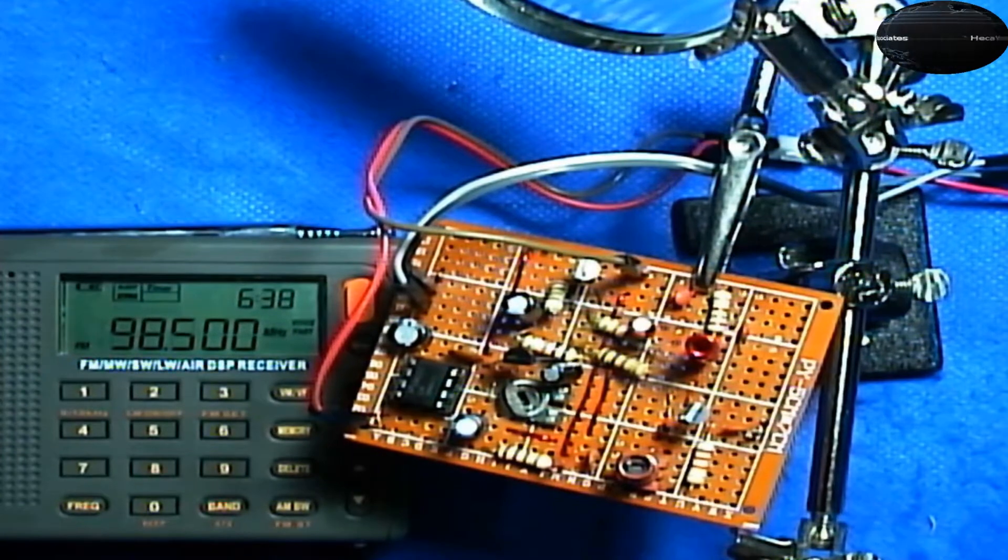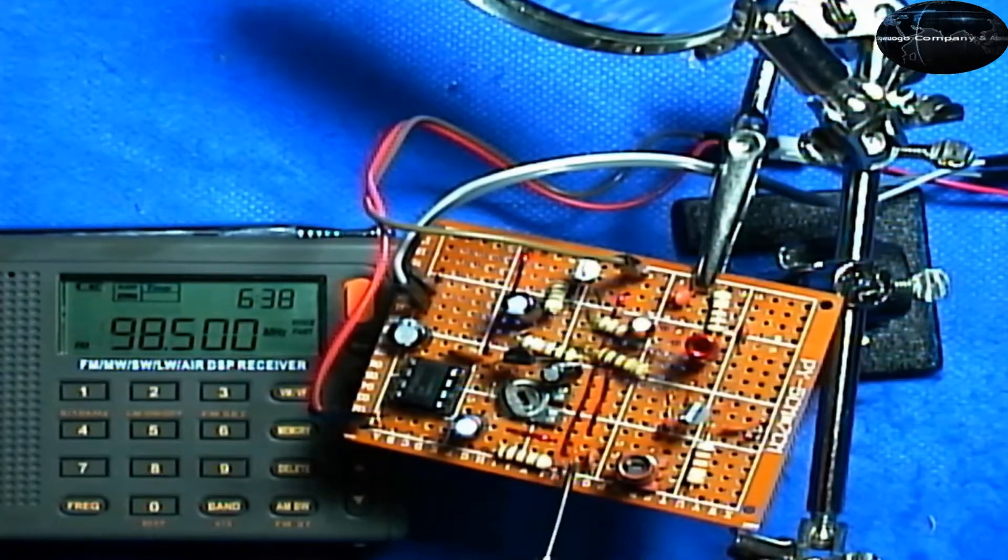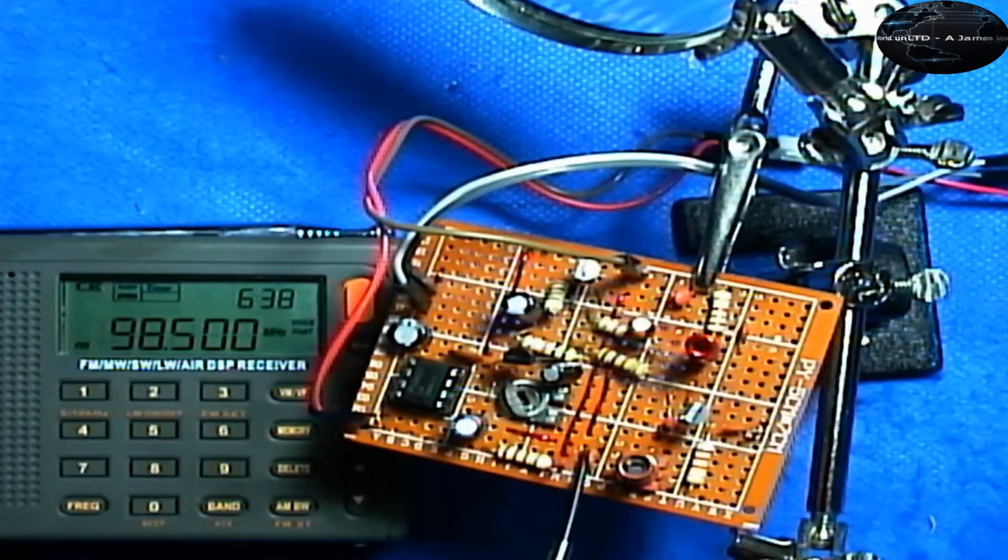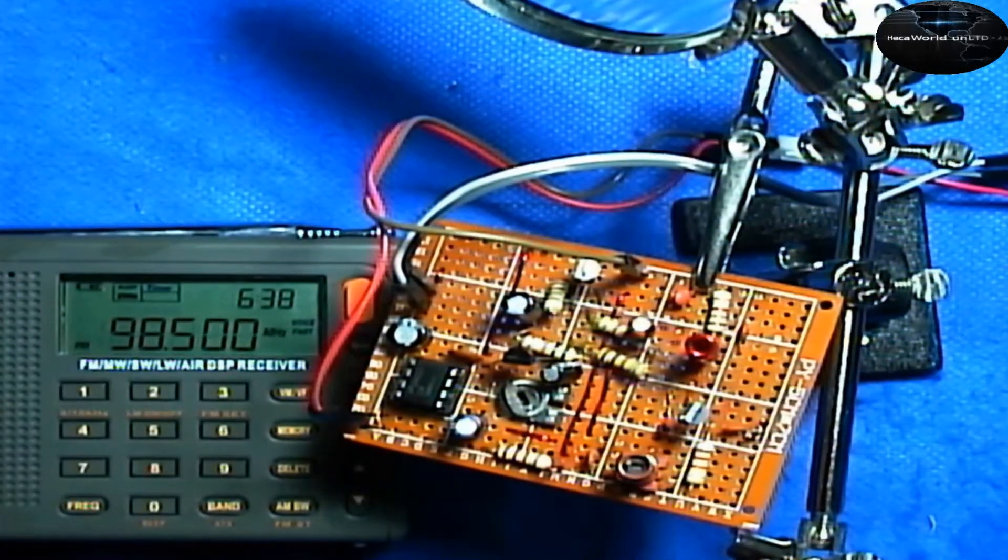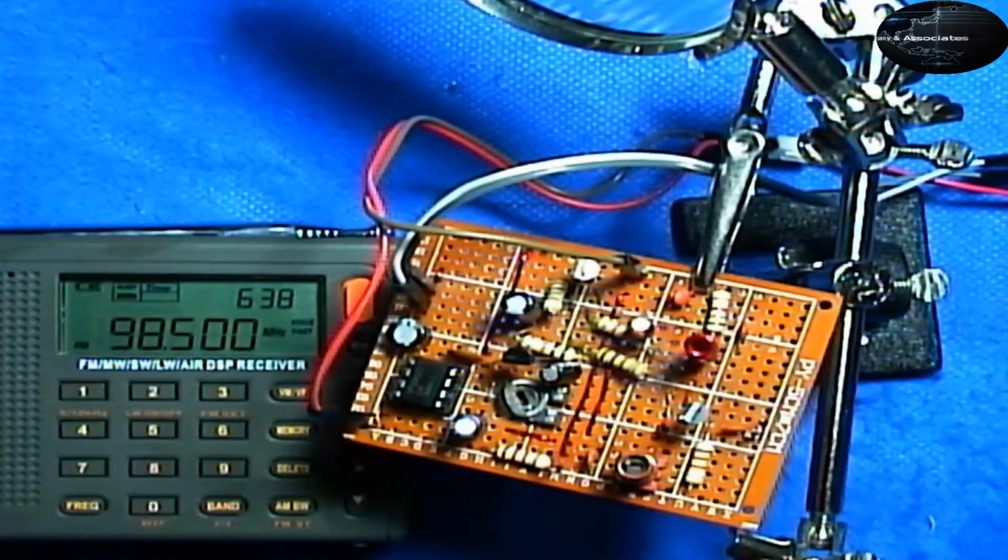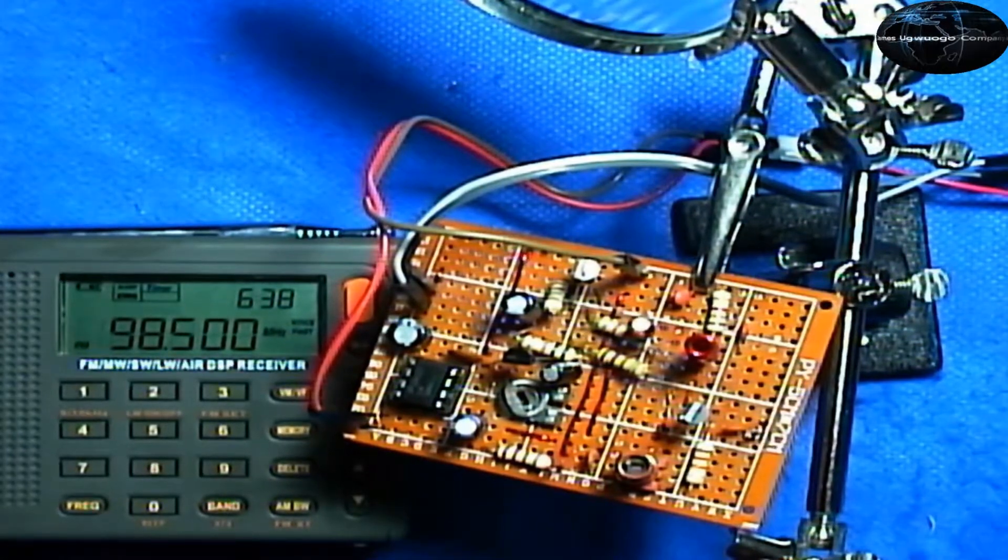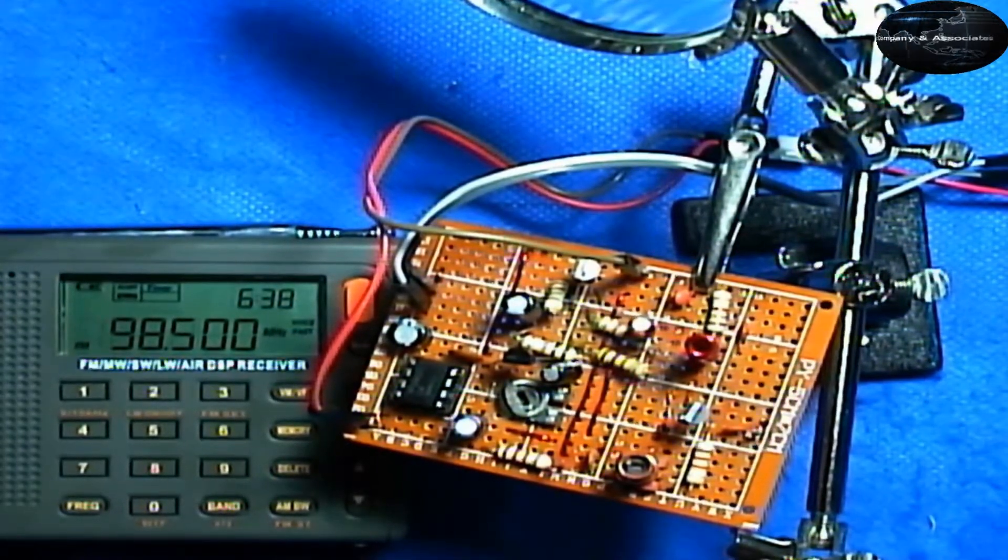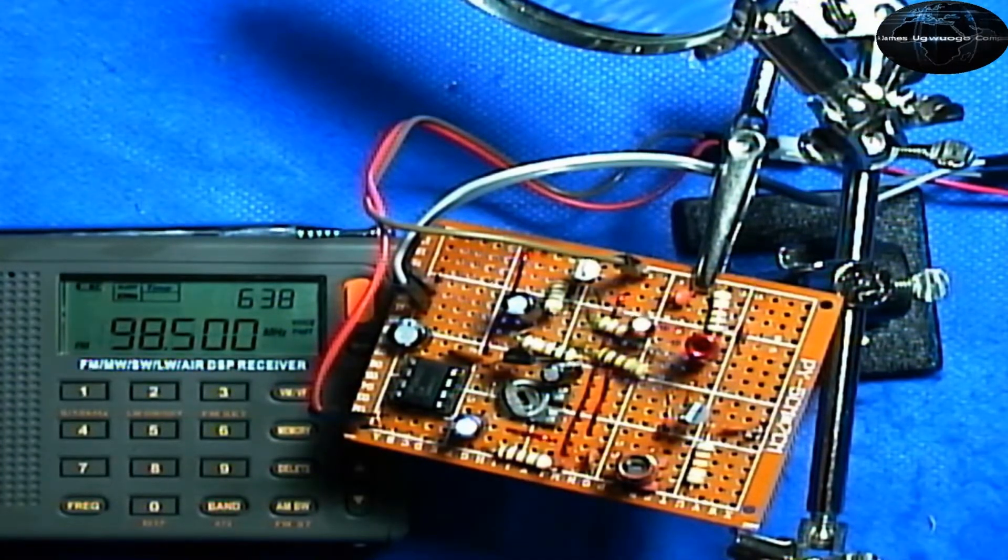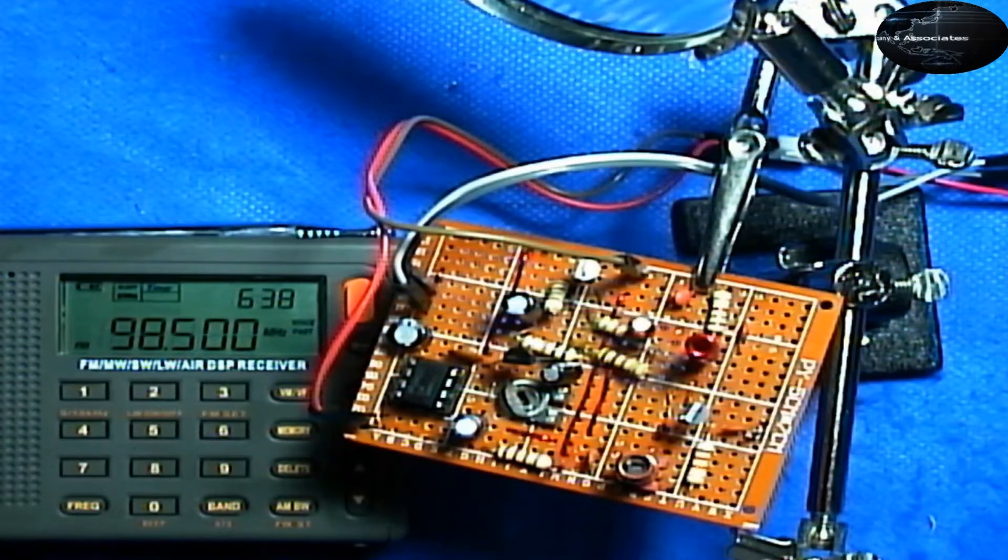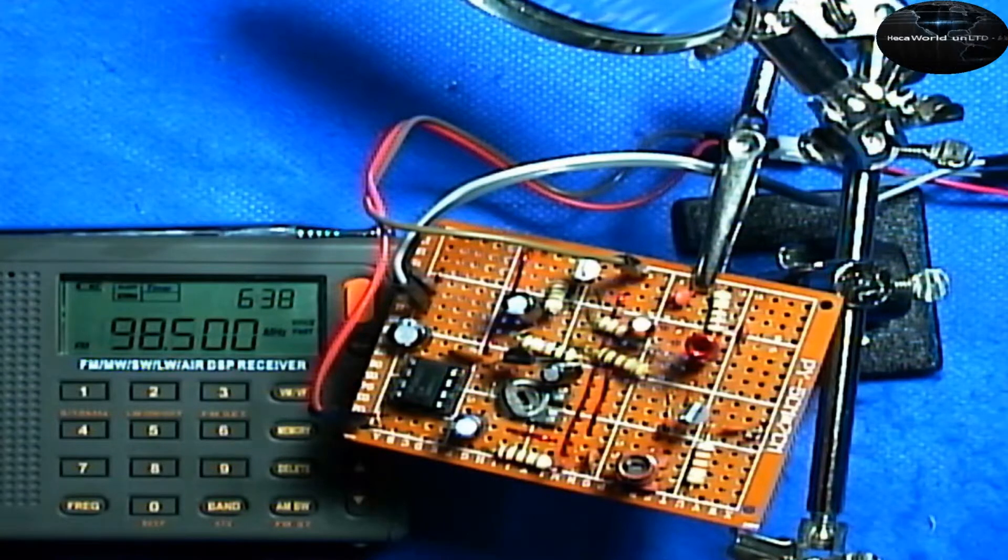Here we use the fixed capacitor, three picofarad capacitor, and an inductor, a variable inductor from 0.6 to 1.7 microhenry. When you have those two in combination, you can get a range from 88 megahertz to 108 megahertz.